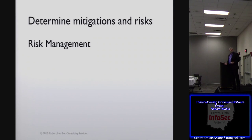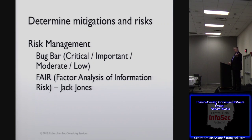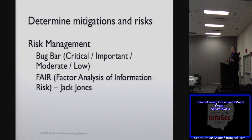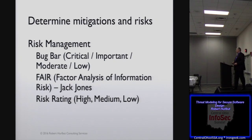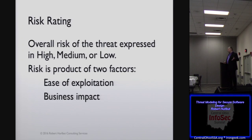Talking about risk management, there's the bug bar, and there's the FAIR approach by Jack Jones — Factor Analysis of Information Risk — a great book on that; a more comprehensive risk analysis and risk management. Some companies use this alone, where a threat is only identified by the thing that you lose — if you don't lose it, it's not a threat. One of the ways I like is just using a simple risk rating of high, medium, or low, which is based on the ease of exploitation and the business impact.